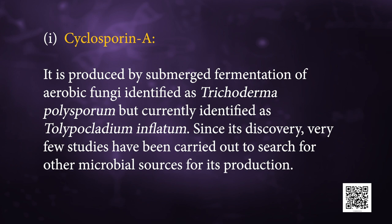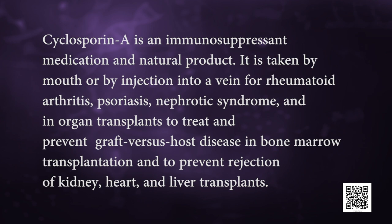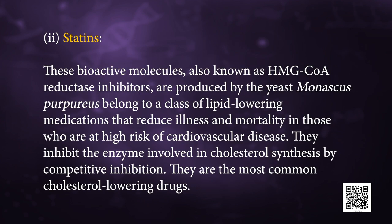First, cyclosporine A. It is produced by submerged fermentation of aerobic fungi identified as Trichoderma polysporum, but currently identified as Tolypocladium inflatum. Since its discovery, very few studies have been carried out to search for other microbial sources for its production. Cyclosporine A is an immunosuppressant medication and natural product. It is taken by mouth or by injection into the vein for rheumatoid arthritis, psoriasis, nephrotic syndrome, and in organ transplants to treat and prevent graft versus host disease in bone marrow transplantation, and to prevent rejection of kidney, heart and liver transplants.